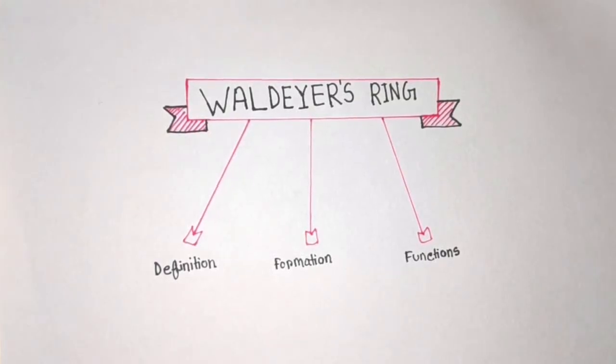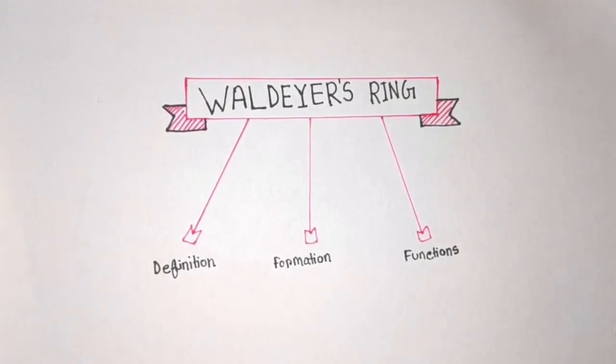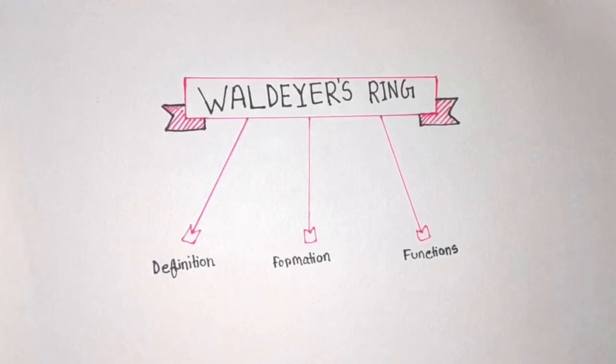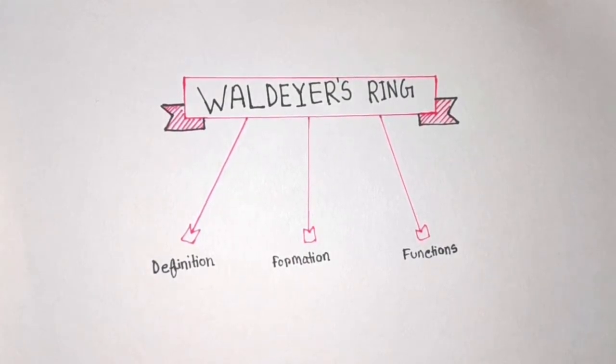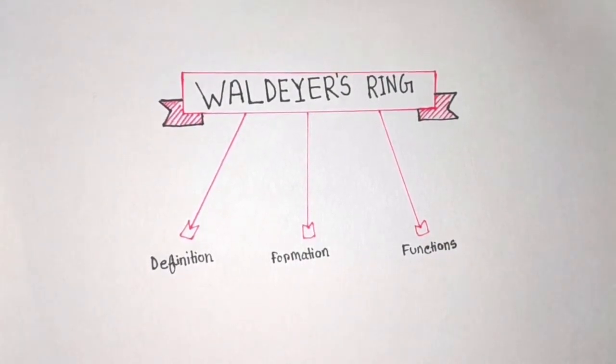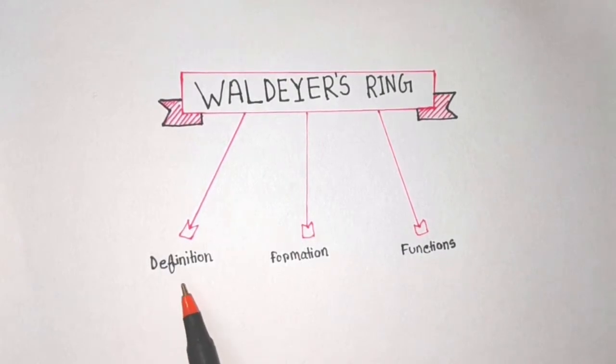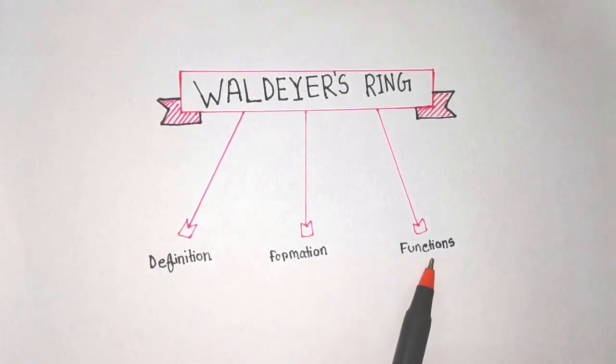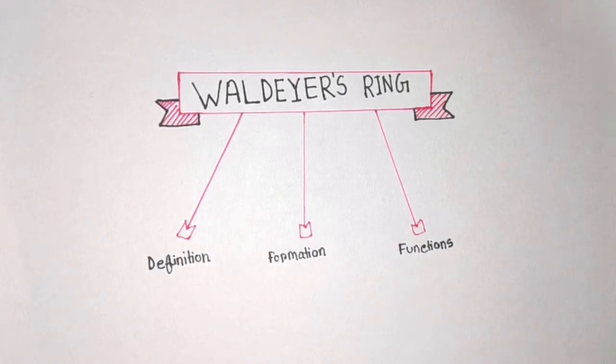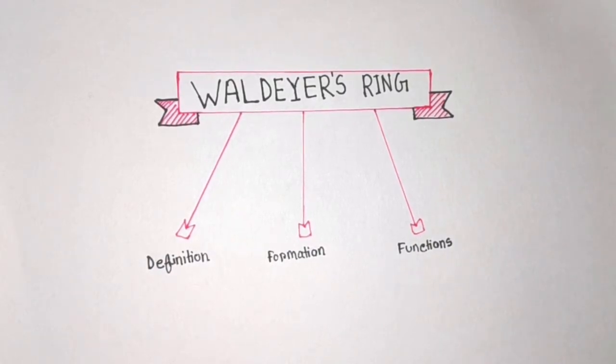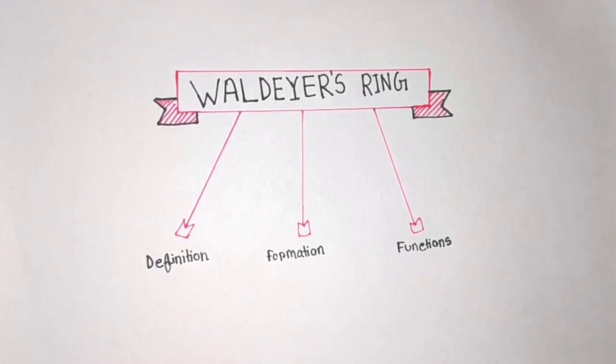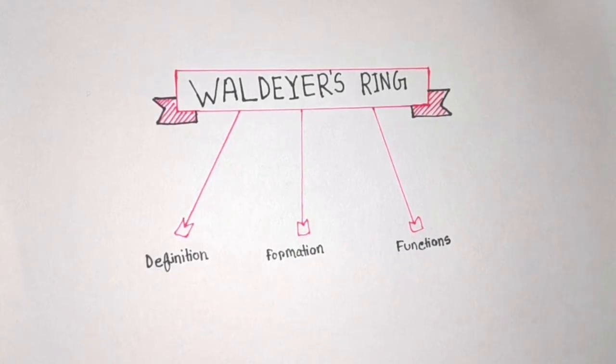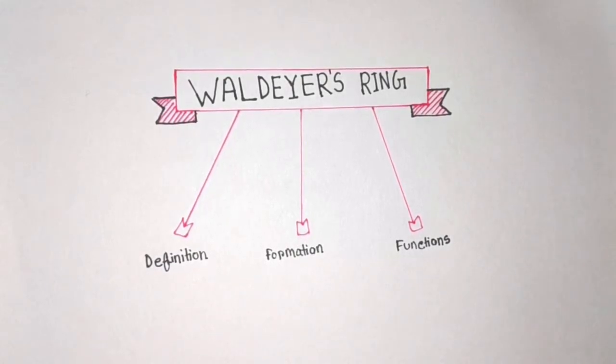Hello everyone, welcome to Med Smashers. Today I'm going to talk about Waldeyer's ring. In this video, I will discuss Waldeyer's ring definition, formation, and functions. Waldeyer's ring is an aggregated collection of lymphoid tissue in the pharyngeal mucosa, which is situated at the junction of the upper respiratory and upper digestive tract in the form of a ring.